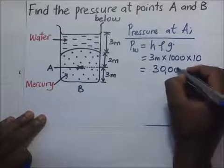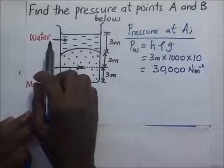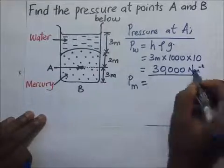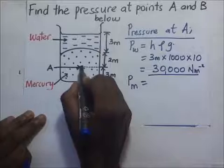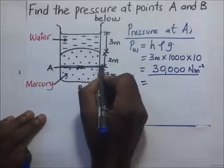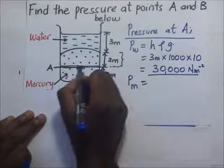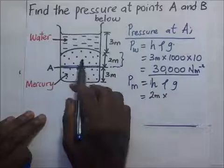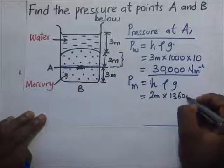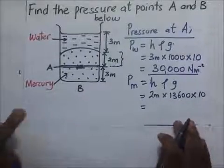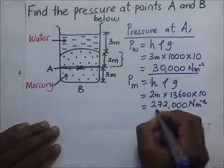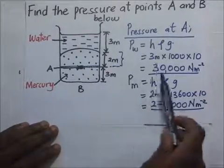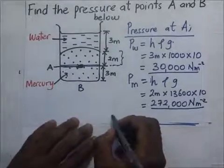The pressure exerted by water is 30,000 N/m². Now for the pressure exerted by mercury at point A: the column of mercury above point A is 2 meters. So it is 2 m × 13,600 kg/m³ × 10, which gives 272,000 N/m². The total pressure at point A is the sum of these two values.